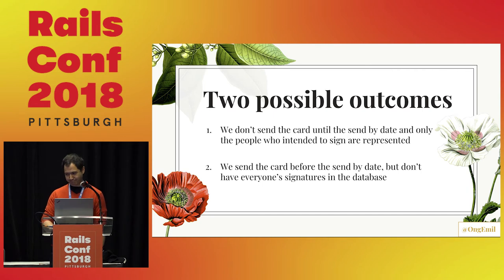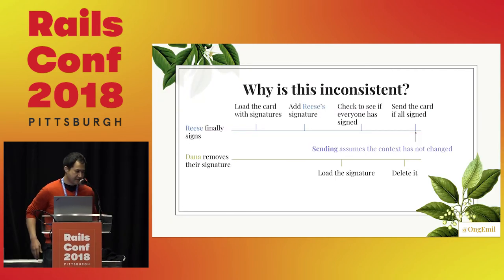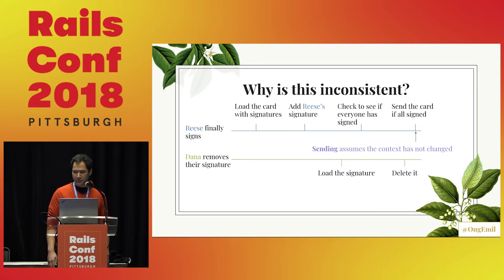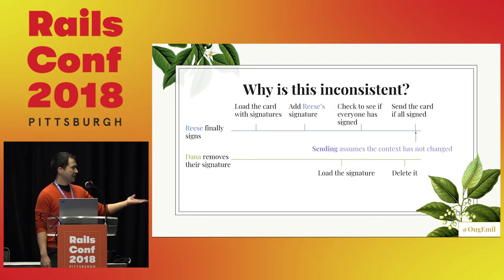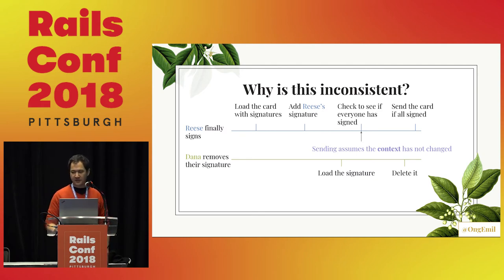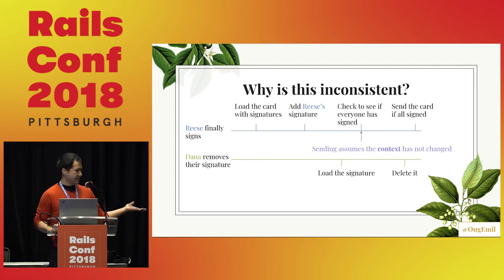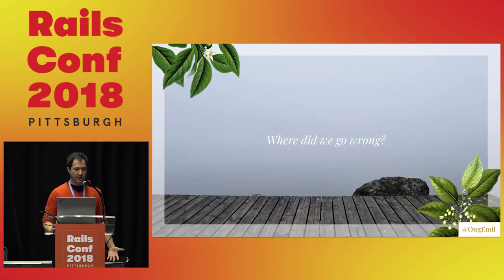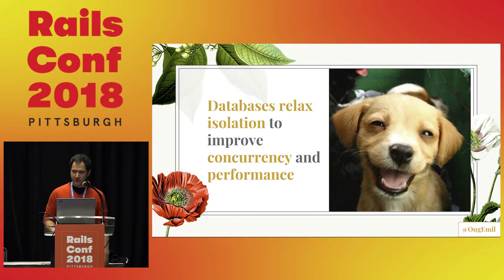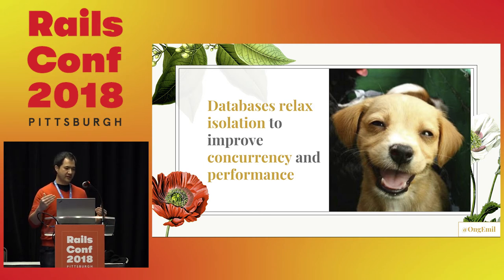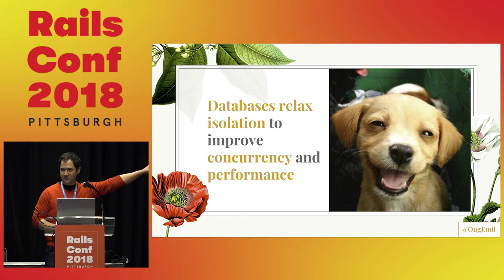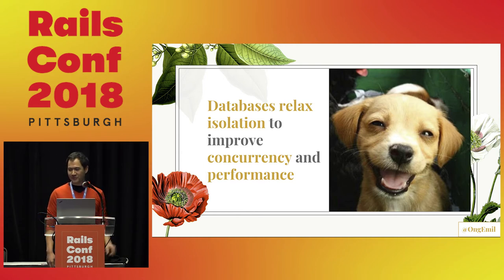Why can we end up in these inconsistent states? When we do the sending, we're assuming that the context from before hasn't changed — we just made a decision based on that context. Even though we talked about those ACID transactions, what went wrong is that the database actually makes trade-offs. The database relaxes isolation to improve concurrency and performance. In certain cases it doesn't have to be as strict — and I put a really cute dog photo here so you'd remember this key important point.